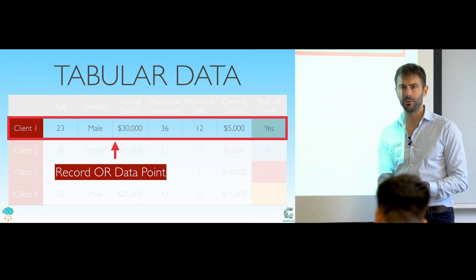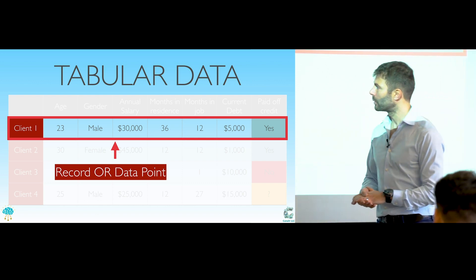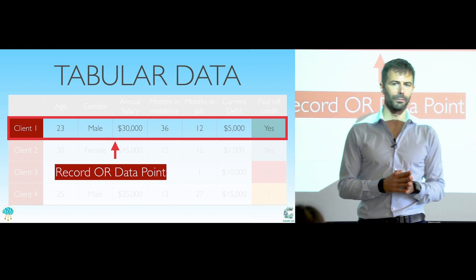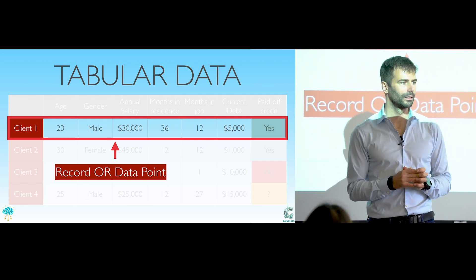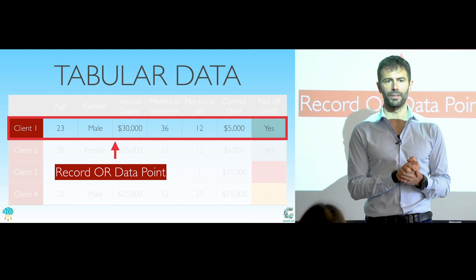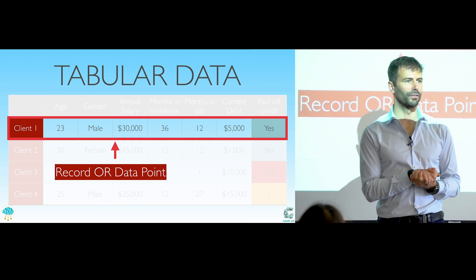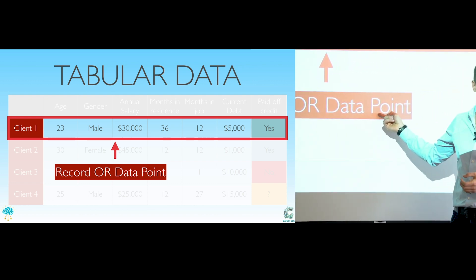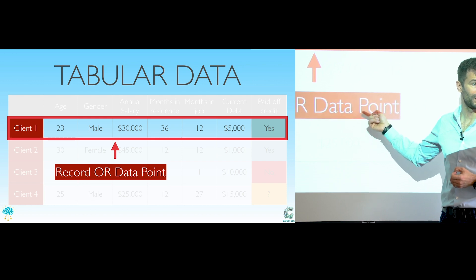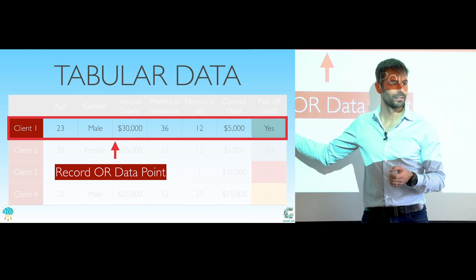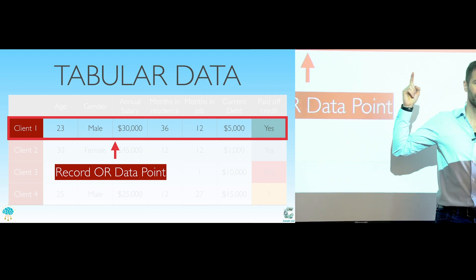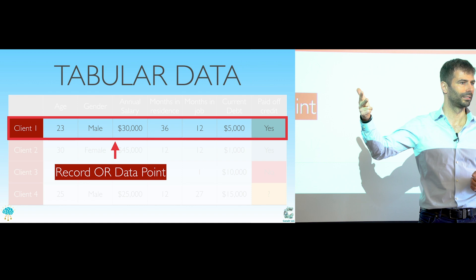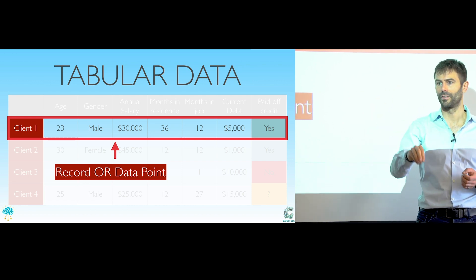So let's get a few names, because data scientists and database people talk about the same things, but they don't know it because they use different names. So when you hear me say the word data point, what I mean is a record in a database or a row in my tabular file. Those three terms — row, record, and data point — are synonyms as far as you're concerned today.